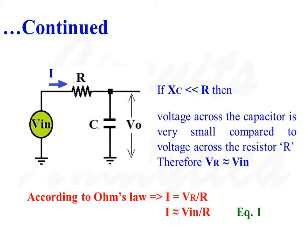Since XC is much lower than resistance R, the voltage across the capacitance is very small compared to the voltage across resistance R. According to KVL, Vin equals Vr plus Vc. But as Vr is much larger than Vc, we can write Vr is approximately equal to Vin. According to Ohm's Law, voltage drop across resistance is proportional to current flow through that resistance, so V equals I times R. Therefore, current flow through the circuit is I equals Vr divided by R.